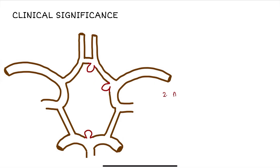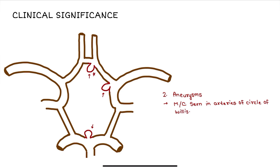Second is aneurysm. Aneurysms are bulges on the arteries, and the arteries of the Circle of Willis are the most common site for these aneurysms, most commonly formed at the bifurcation of arteries. These are saccular in shape and are also called berry aneurysms because they are berry-shaped. Rupture of these berry aneurysms can cause subarachnoid hemorrhage.